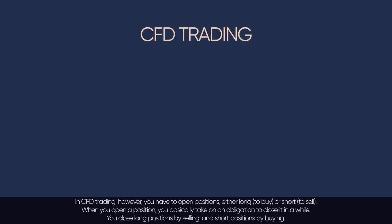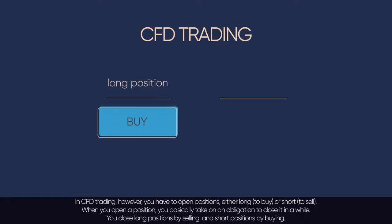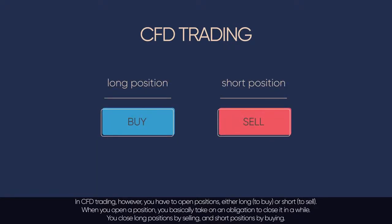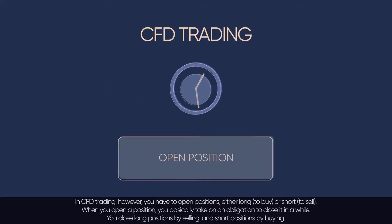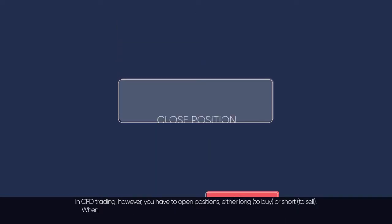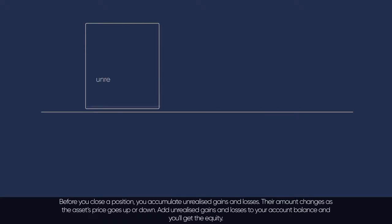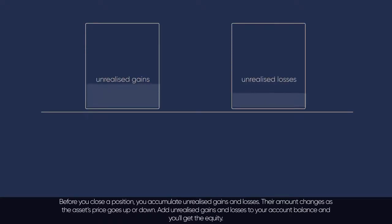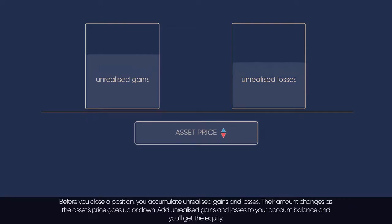In CFD trading, however, you have to open positions — either long to buy or short to sell. When you open a position, you basically take on an obligation to close it in a while. You close long positions by selling and short positions by buying. Before you close a position, you accumulate unrealised gains and losses, and their amount changes as the asset's price goes up or down.